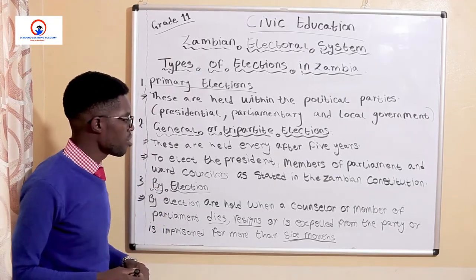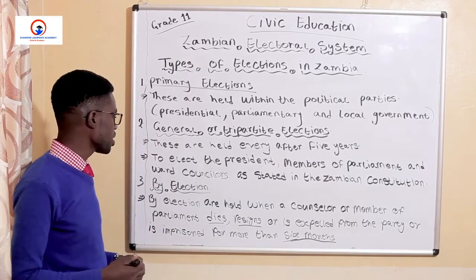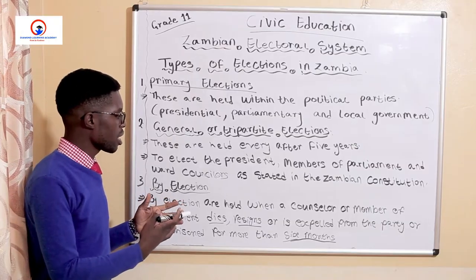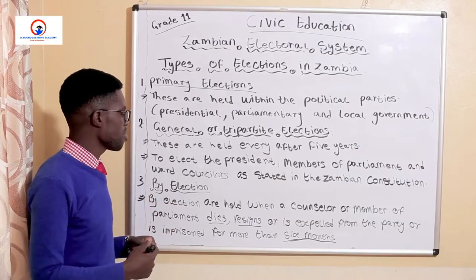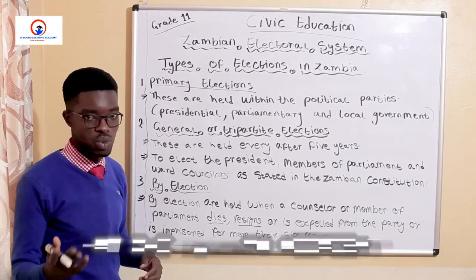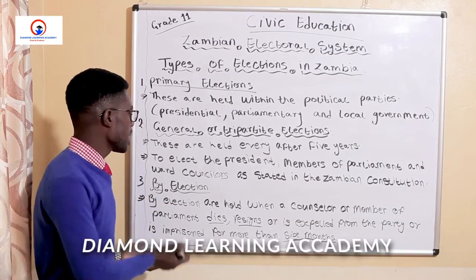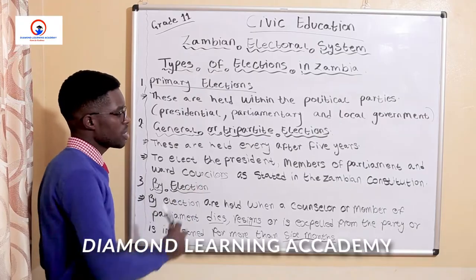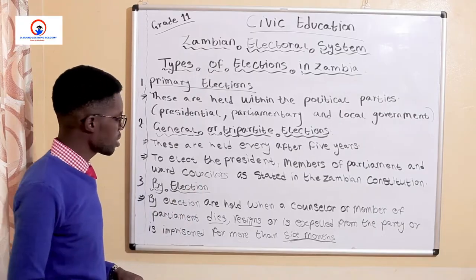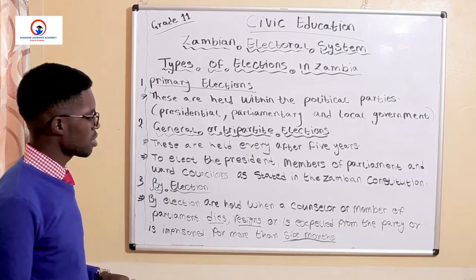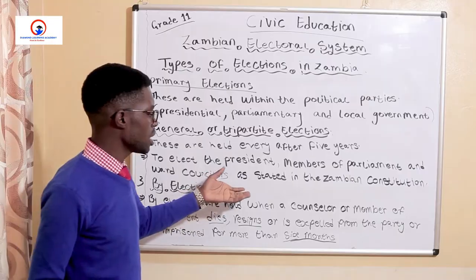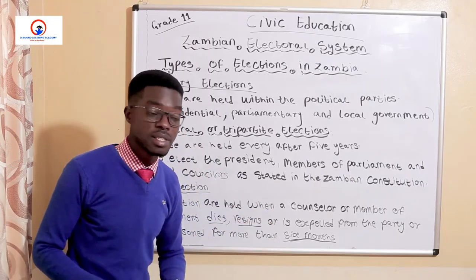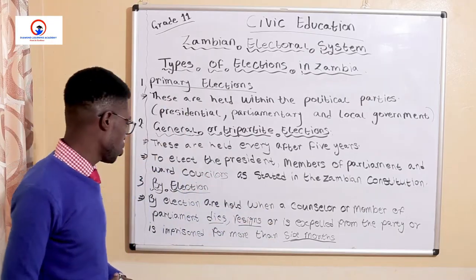These general elections are held every five years to elect the president, the member of parliament, and the councillors, as stipulated in the Zambian constitution.